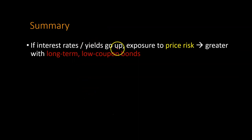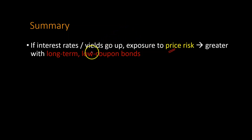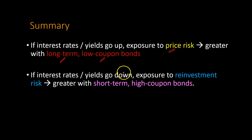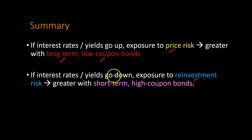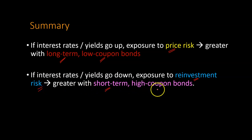So in summary, if interest rates or yields go up, you are more exposed to price risk. Why? Because as yields go up, prices go down. This risk is going to be greater if you're holding long-term bonds or bonds that have low coupon rates. Additionally, if interest rates or yields go down, you're not as worried about price risk because the prices of your bonds are going to go up. However, you are concerned about reinvestment risk, because if yields go down and you're going to be getting some cash flows, you have to reinvest them and you wouldn't want to do that at lower yields or rates. This reinvestment risk tends to be greater for short-term bonds or bonds that are paying high coupons.